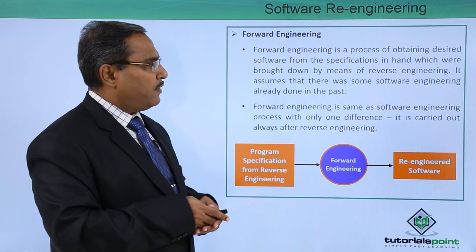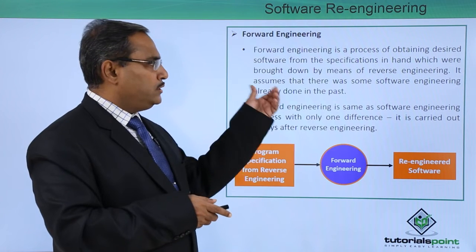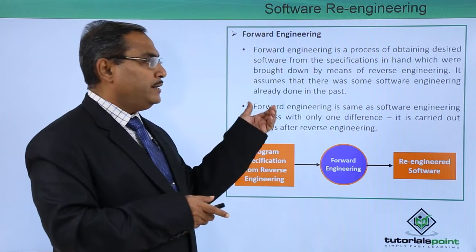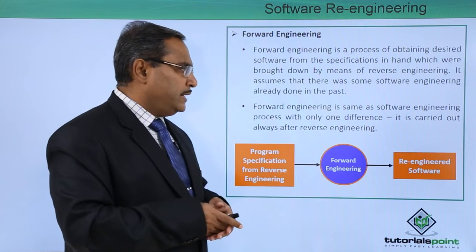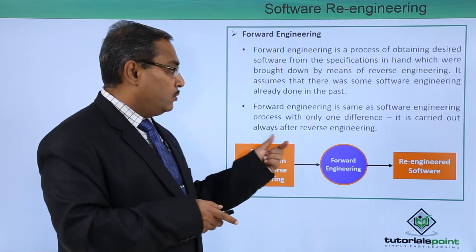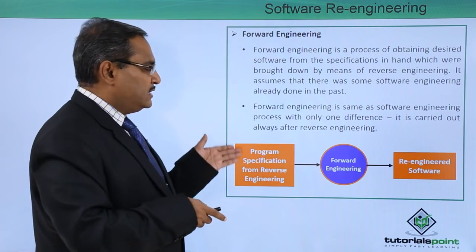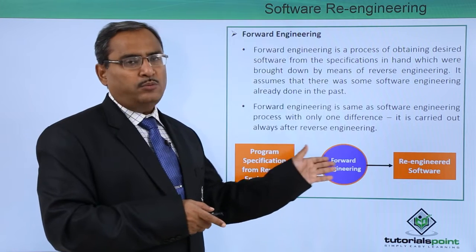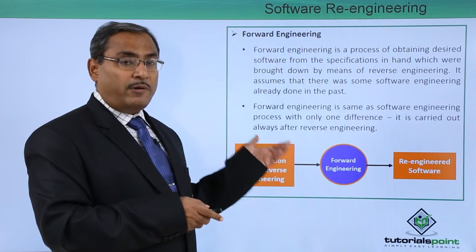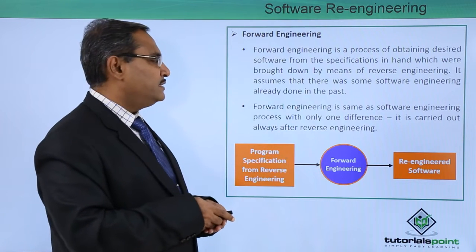Forward engineering is a process of obtaining desired software from the specifications brought down by means of reverse engineering. It assumes that some software engineering was already done in the past. Forward engineering is the same as a software engineering process with one key difference: it is always carried out after reverse engineering. We have the specifications, we go for implementation, and we obtain the re-engineered version of the software.